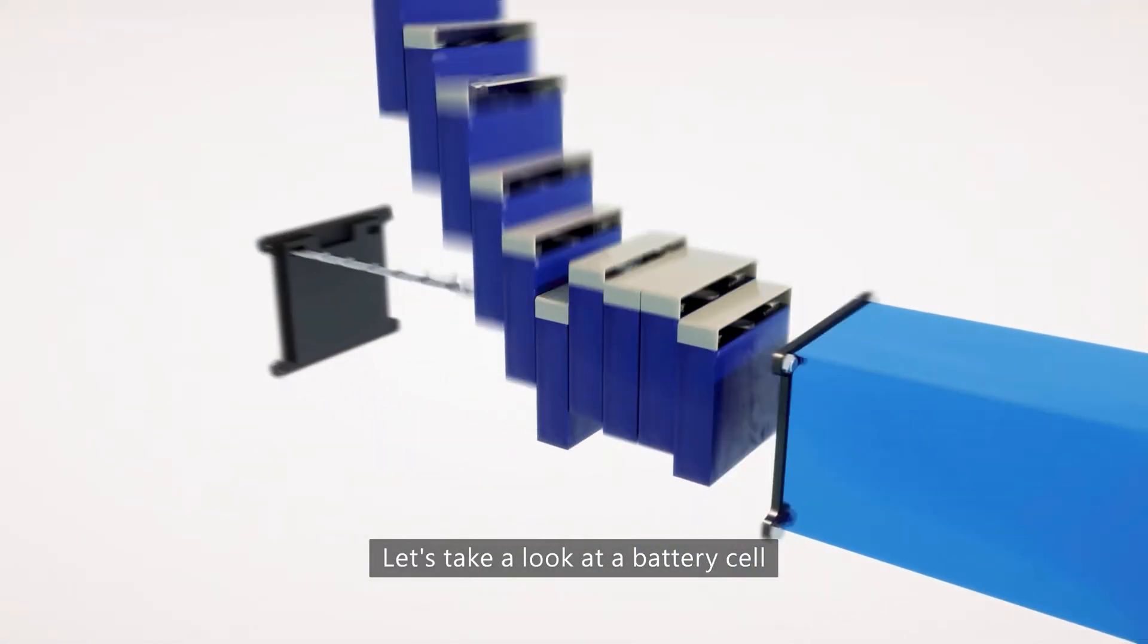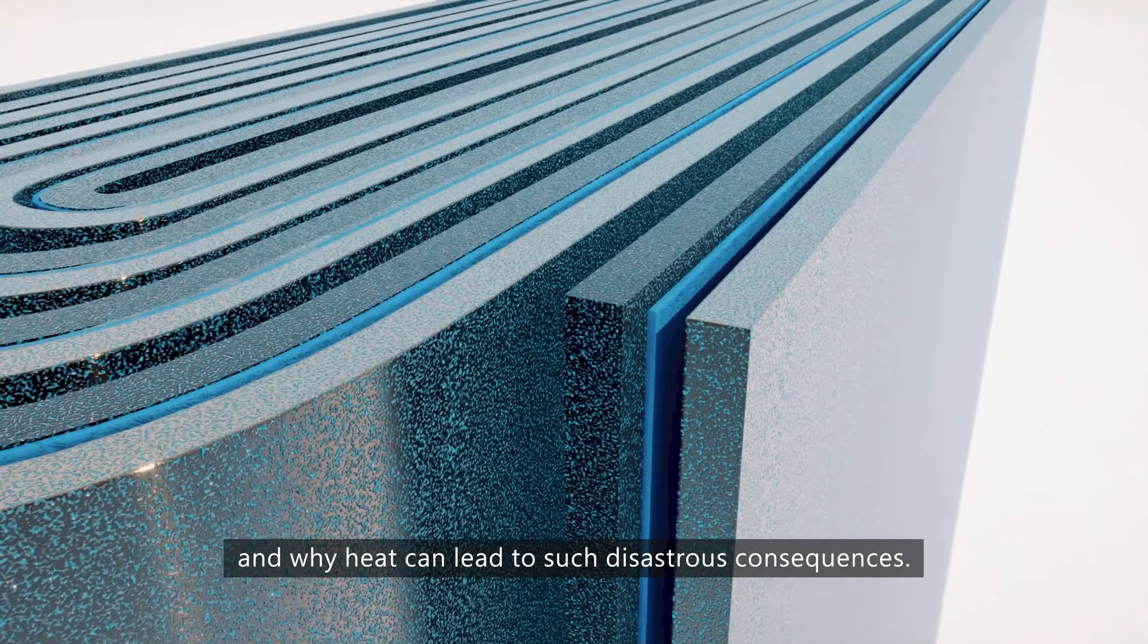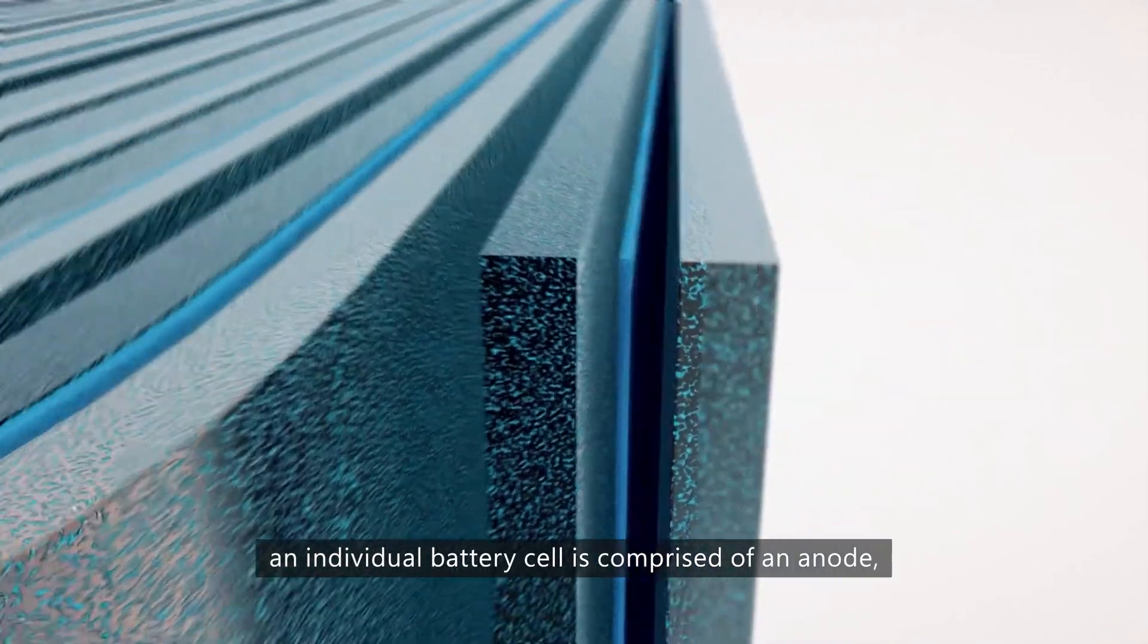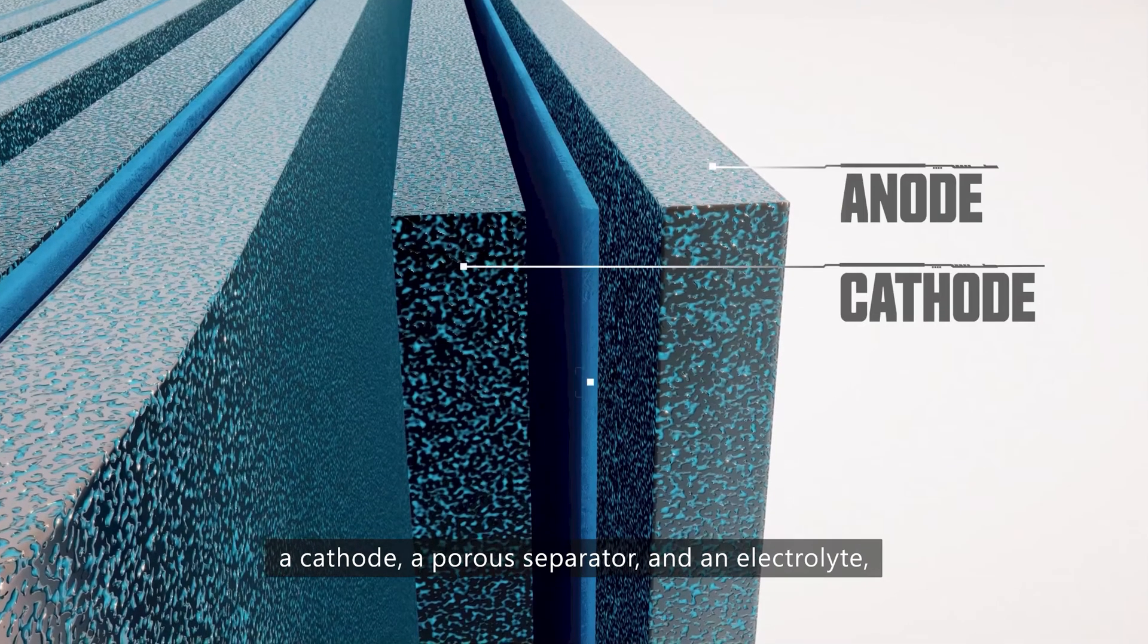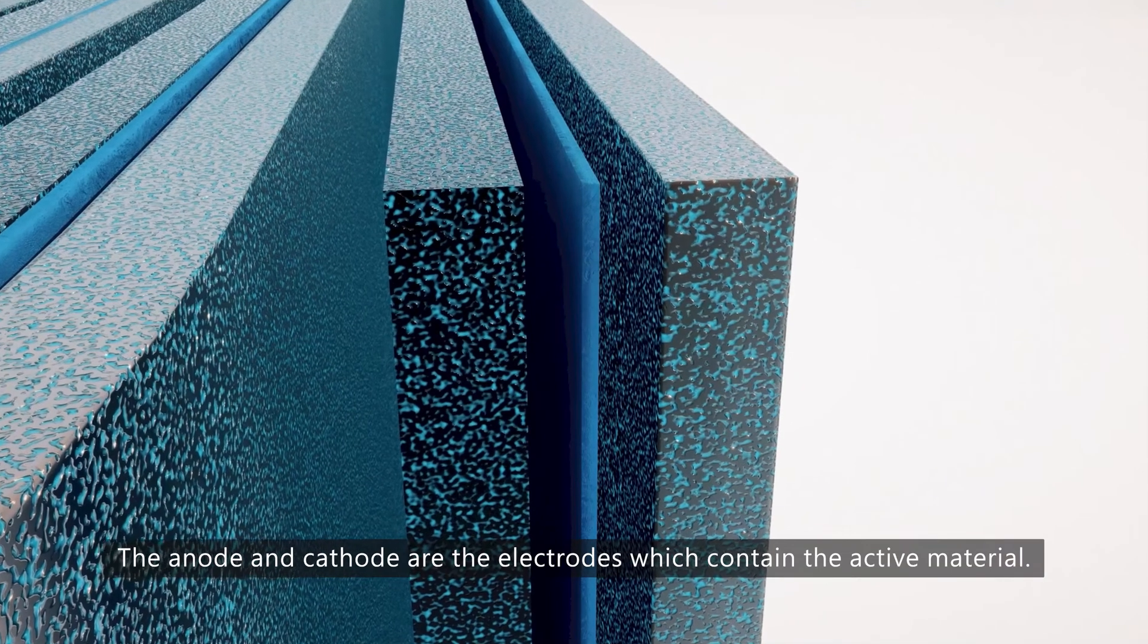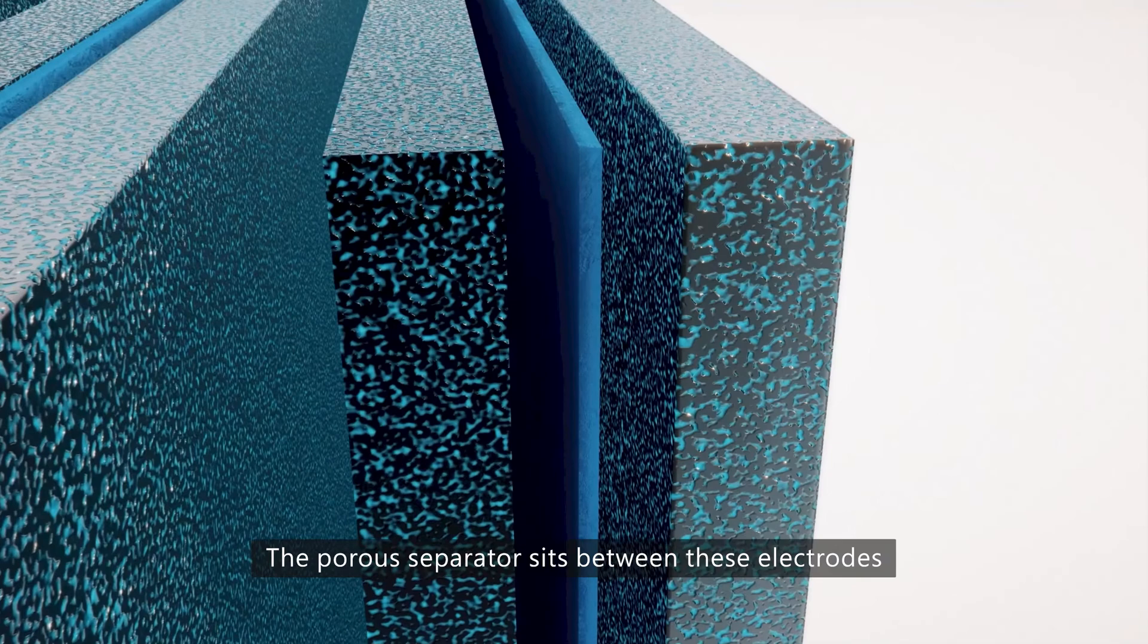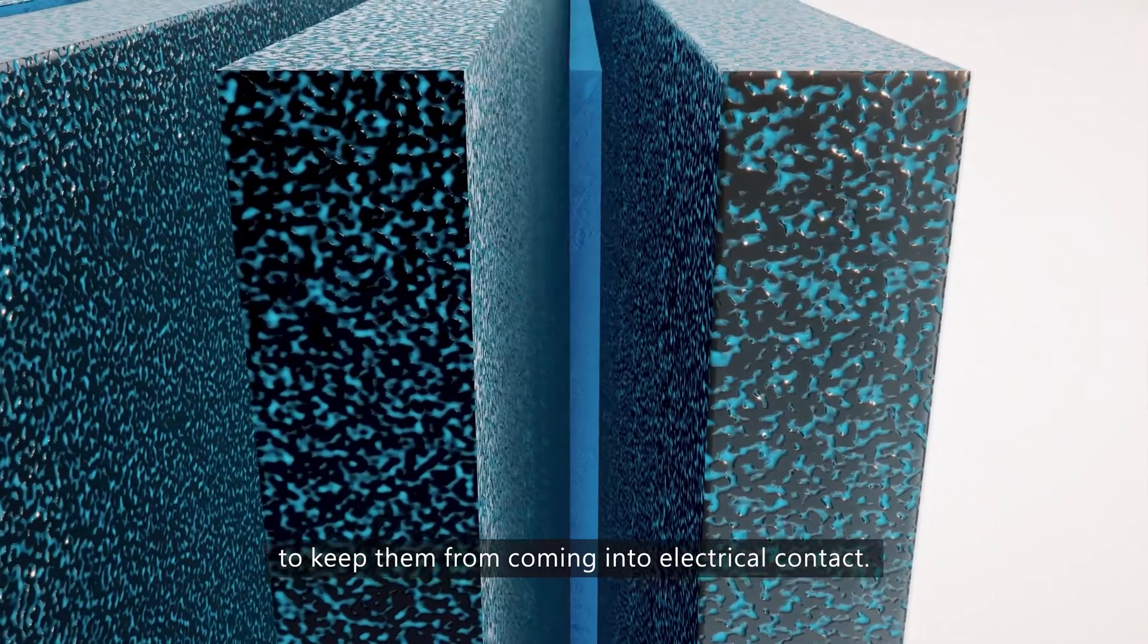Let's take a look at a battery cell and why heat can lead to such disastrous consequences. On a basic level, an individual battery cell is comprised of an anode, a cathode, a porous separator and an electrolyte which fills the cell. The anode and cathode are the electrodes which contain the active material. The porous separator sits between these electrodes to keep them from coming into electrical contact.